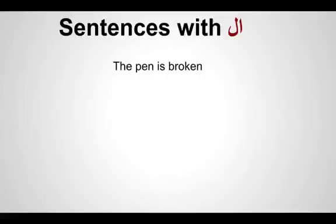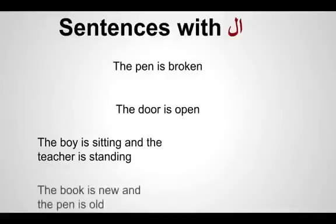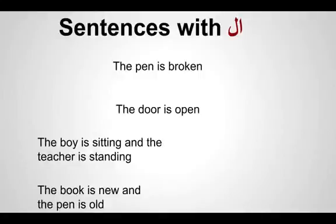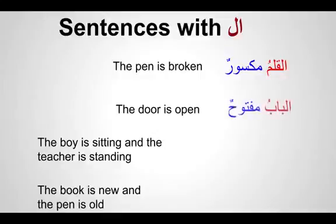Let's make some simple sentences: the pen is broken, the door is open, the boy is sitting, the teacher is standing, the book is new, the pen is old. If you notice in all these sentences, when we begin we always use 'the,' meaning we use a definite article. This means the muptada in Arabic, when we start with a proper noun, that proper noun will always be definite. For example: al-qalamu maksoorun — the pen is broken.